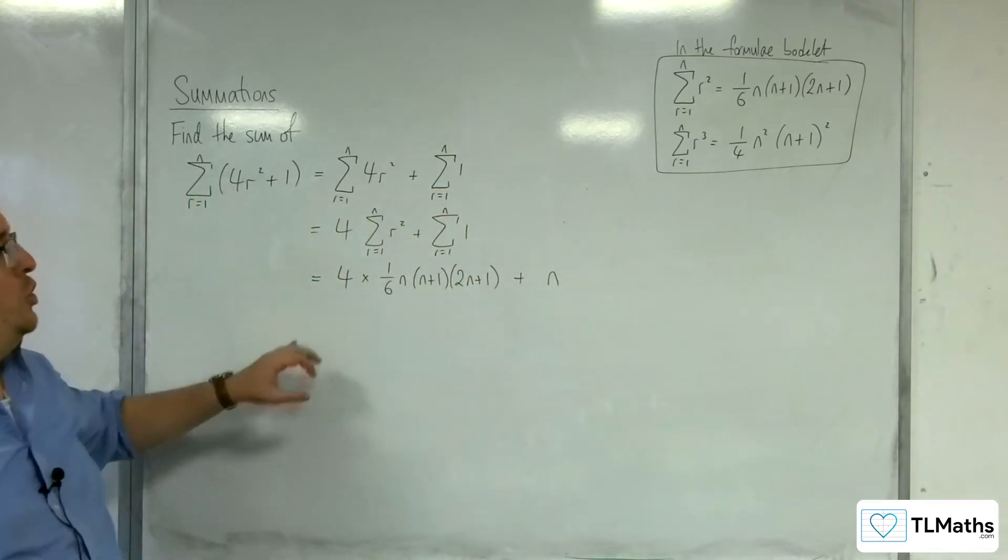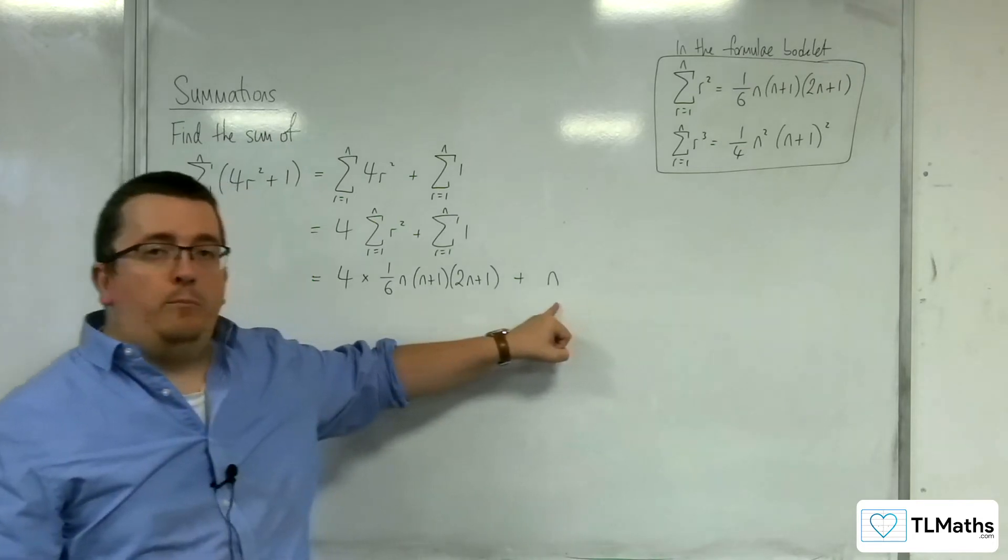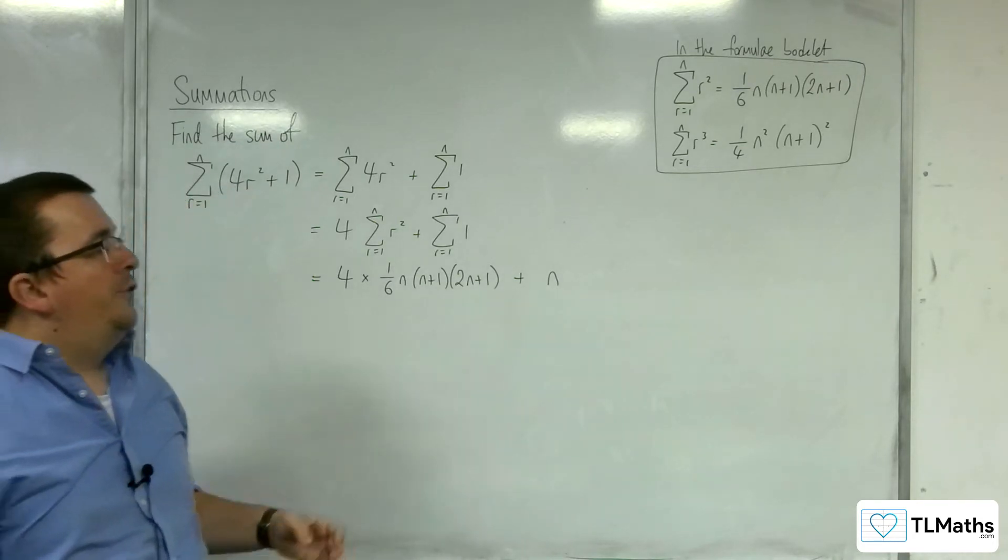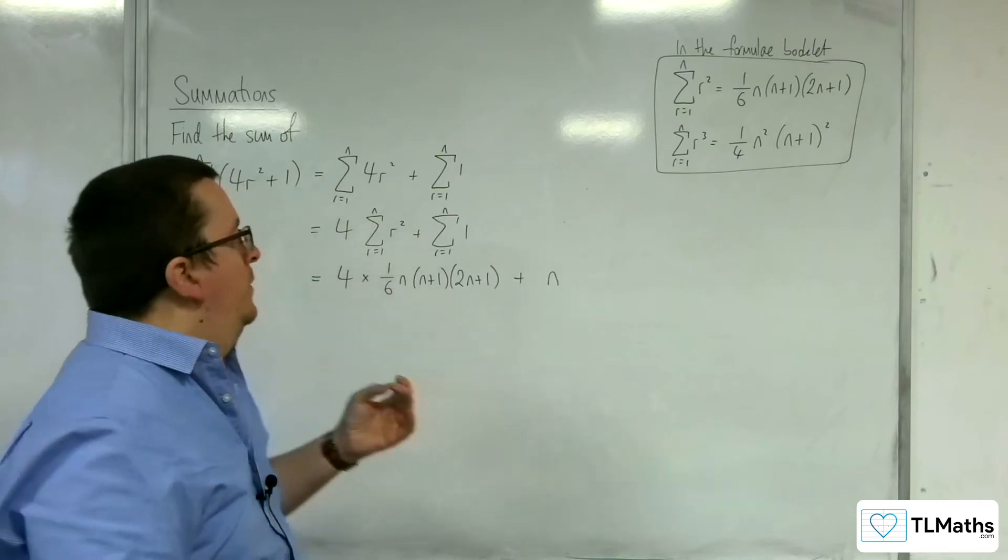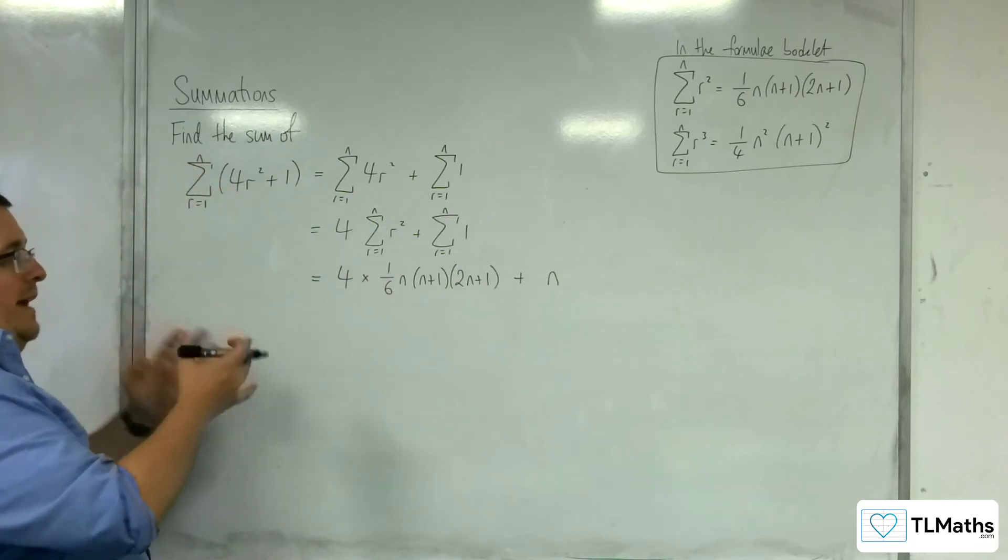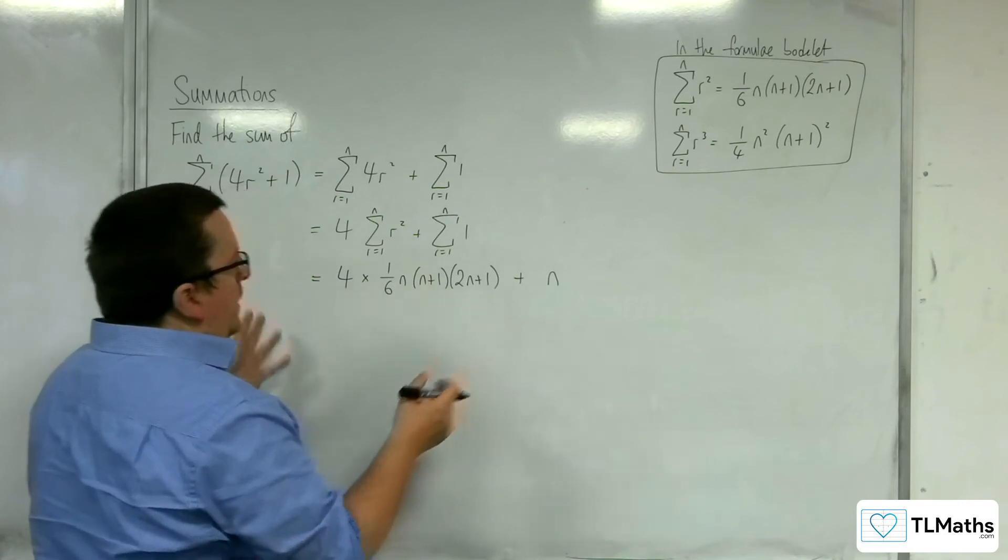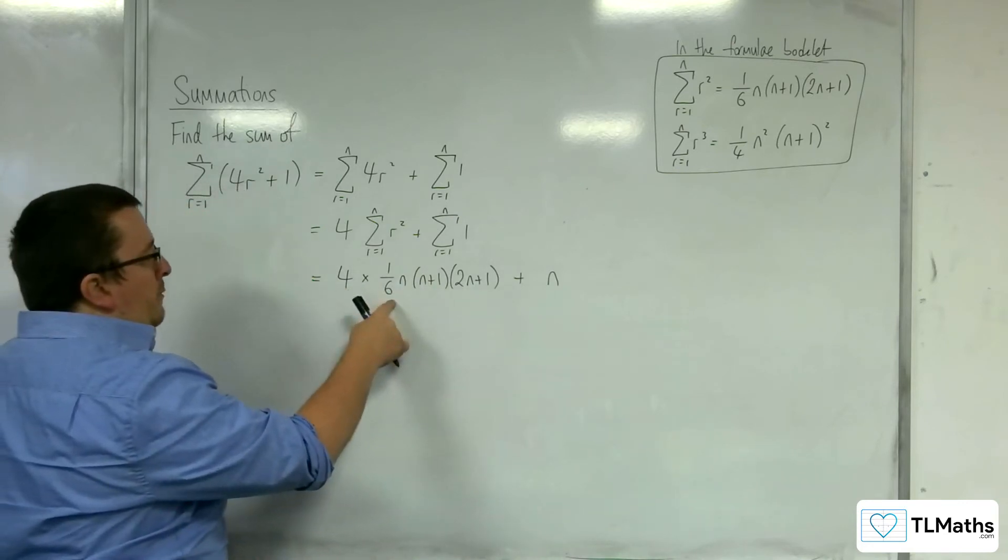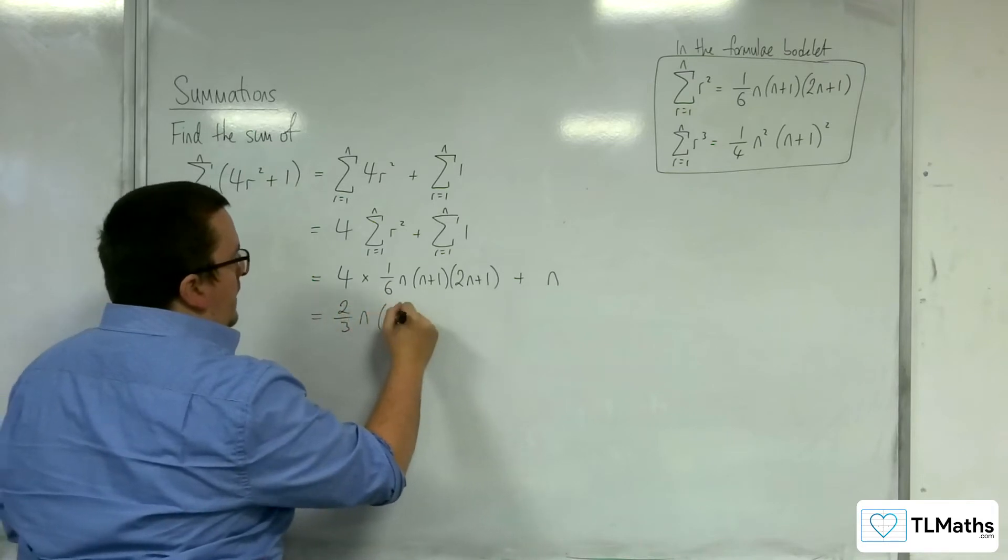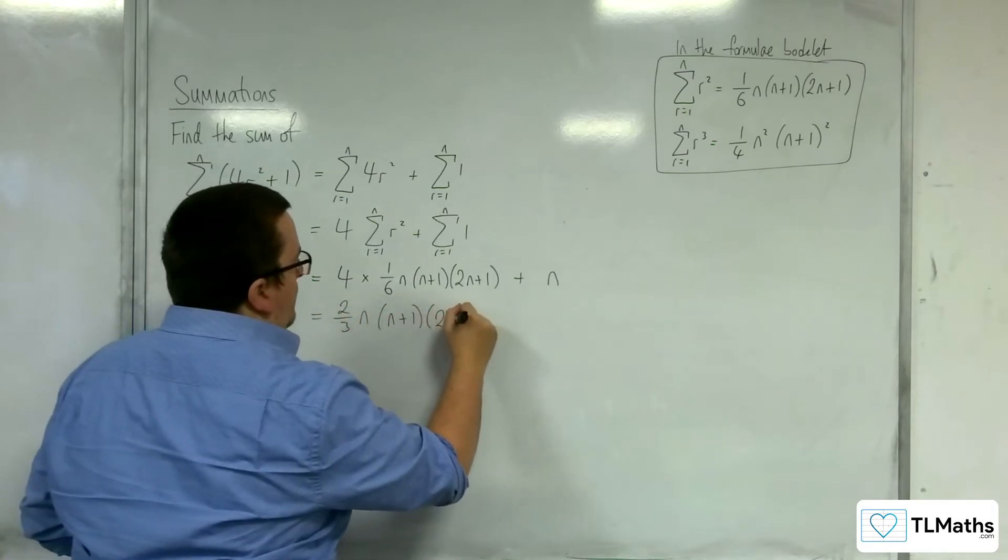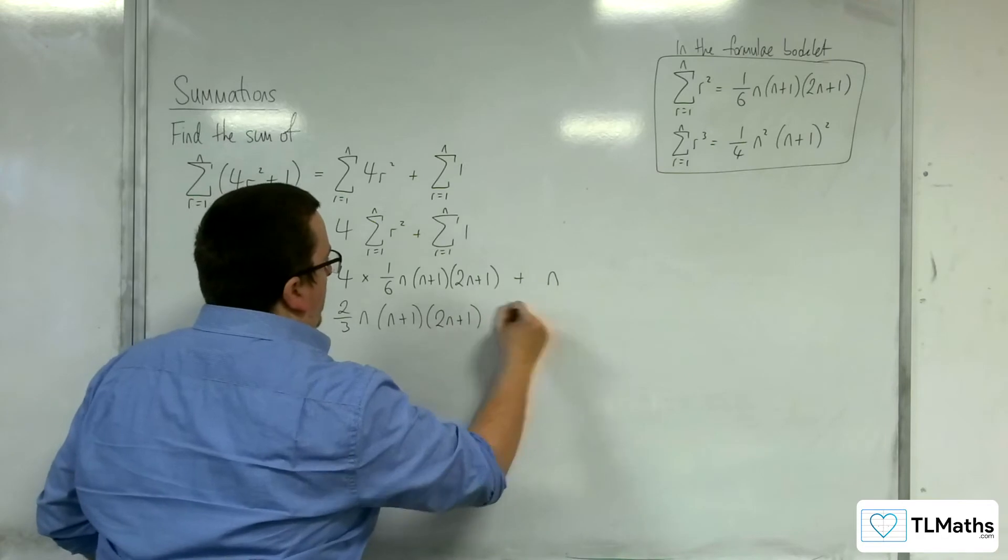So our job here is to simplify this. We want to write it as one single term. So in order to do that, we're going to factorize. So firstly, 4 times 1 sixth, let's simplify that. That's 2 thirds. n, n plus 1, 2n plus 1, plus n.